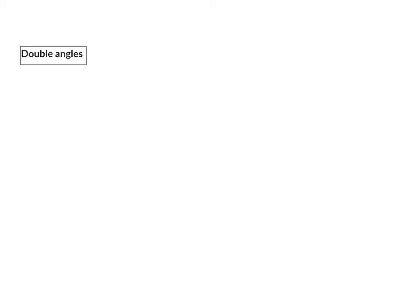If we look at double angles, the word tells you exactly what it is. It is double or twice a specific angle. This can also be rewritten as x plus x, which is now a compound angle. So if we think about sin of 2x, a double angle,